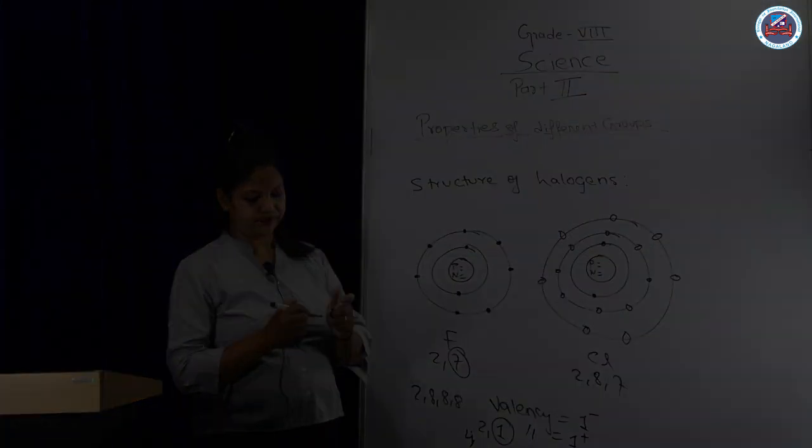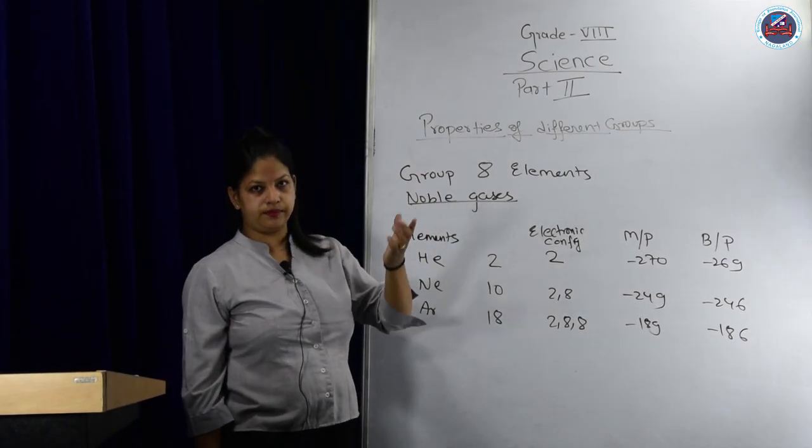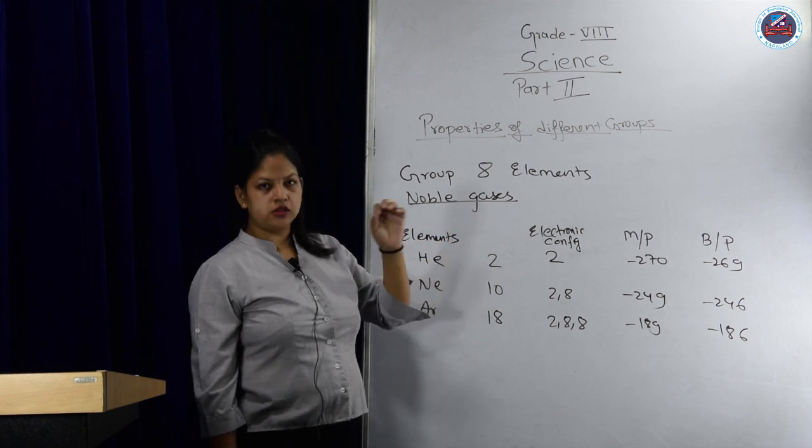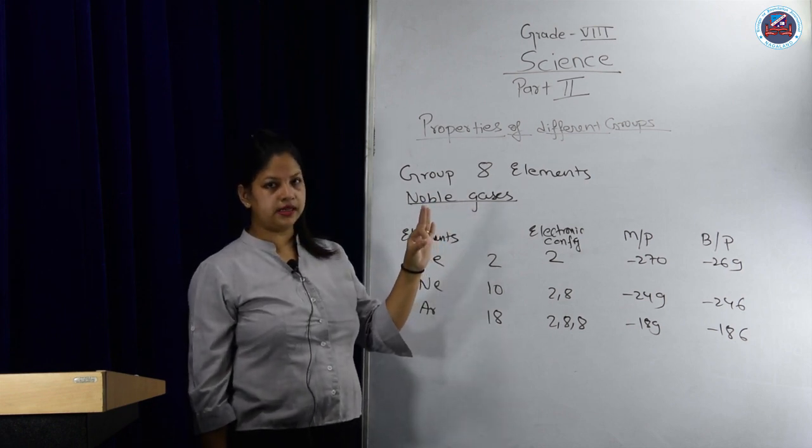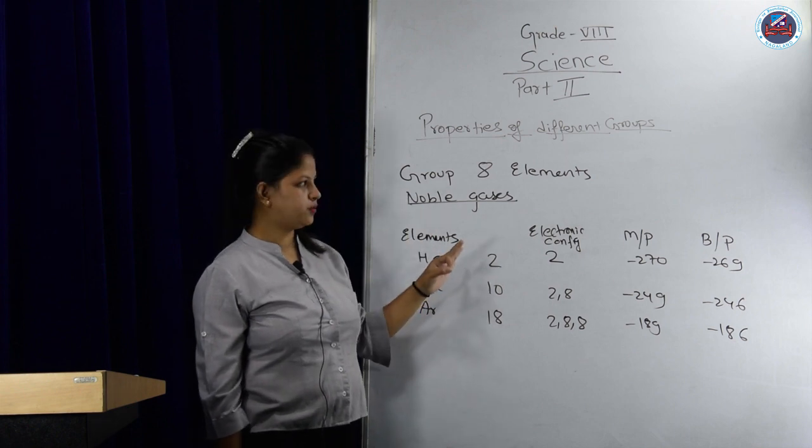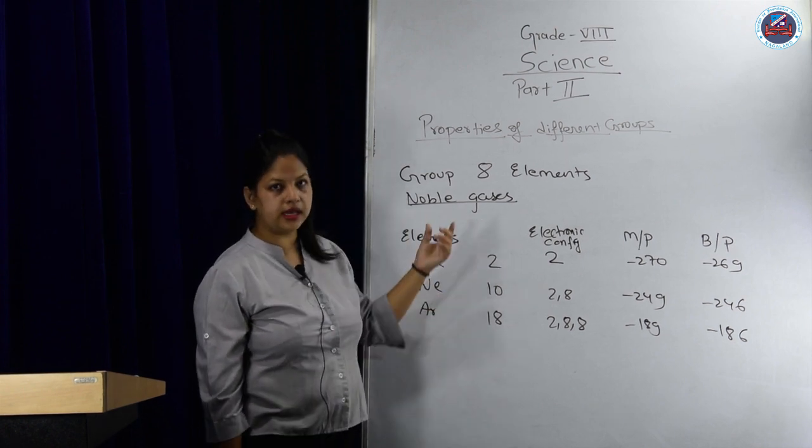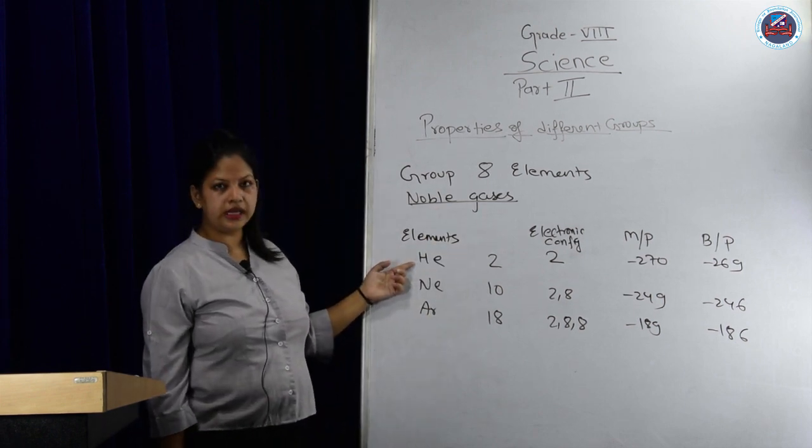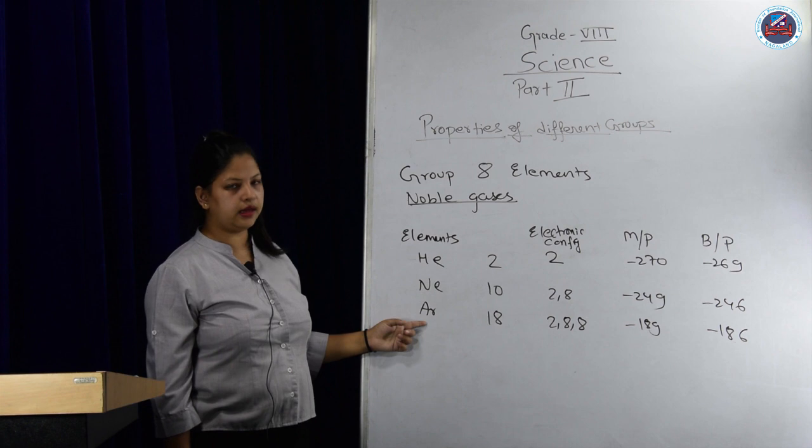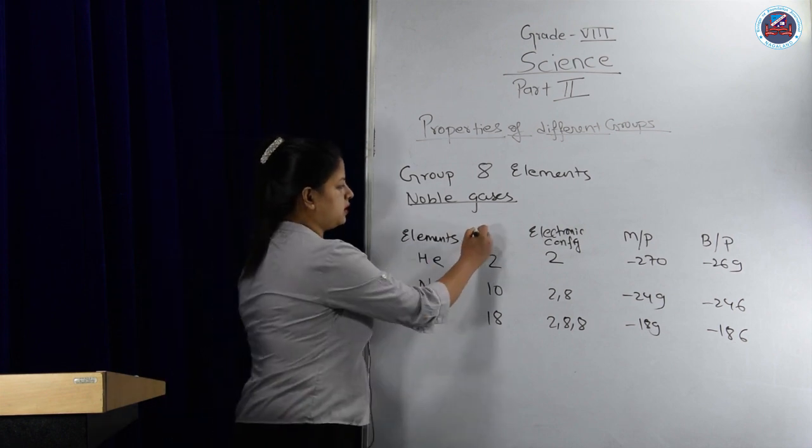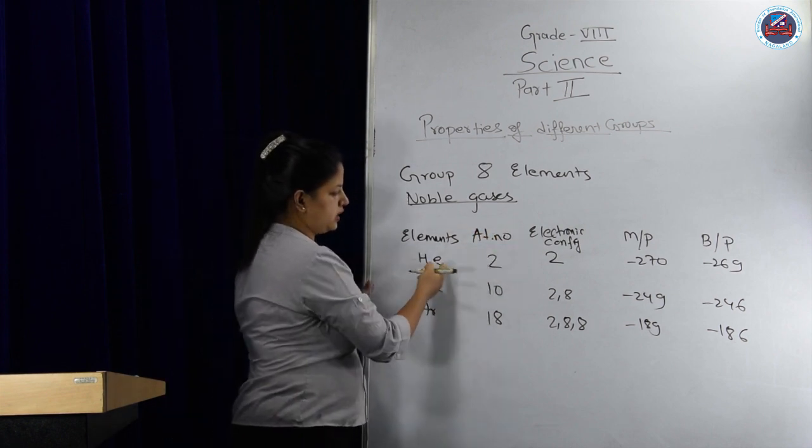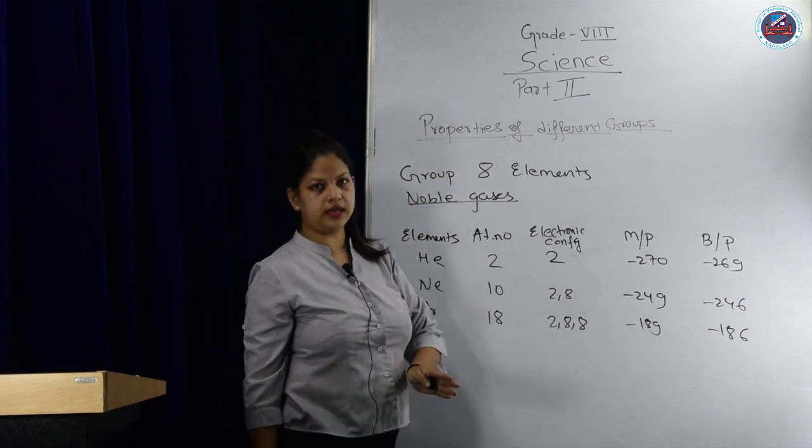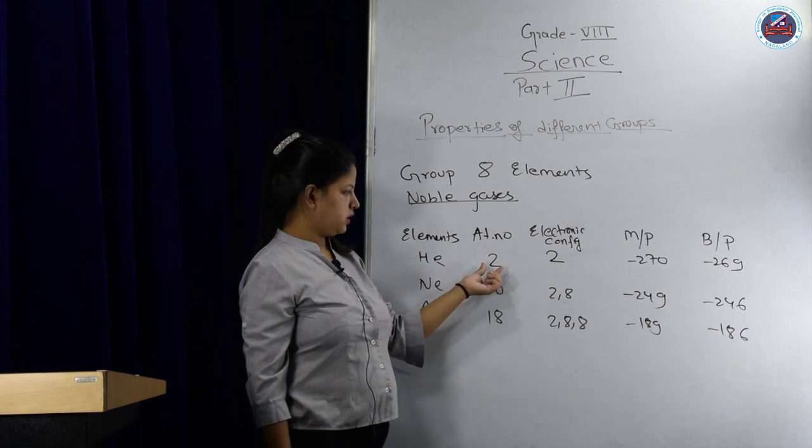This is the last topic of this chapter: group 8 elements, which we call noble gases. Group 1 elements were metals, group 7 elements were halogens, and this is group 8, noble gases. Here we have He for helium, Ne for neon, and Ar for argon. Their atomic numbers are 2 for helium, 10 for neon, and 18 for argon.